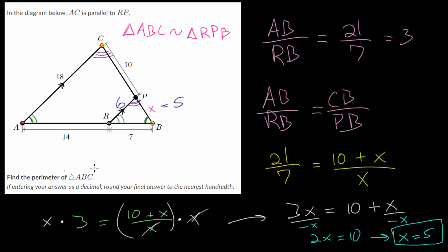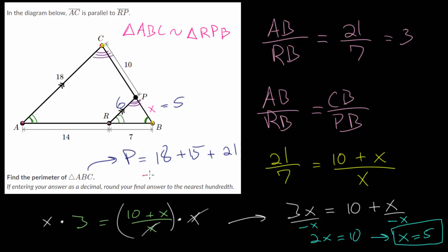In this problem, we need to find the perimeter of the bigger triangle, triangle ABC. The perimeter is 18 plus 10 plus 5, which gives CB as 15, plus 7 plus 14, which gives AB as 21. Adding all of these together, the perimeter of triangle ABC is 54.